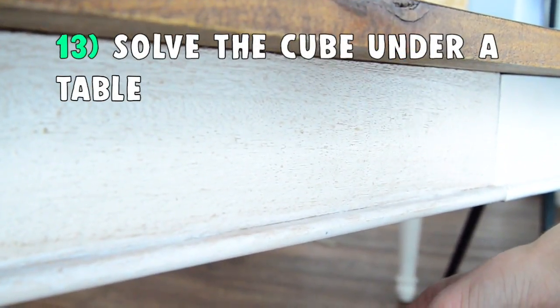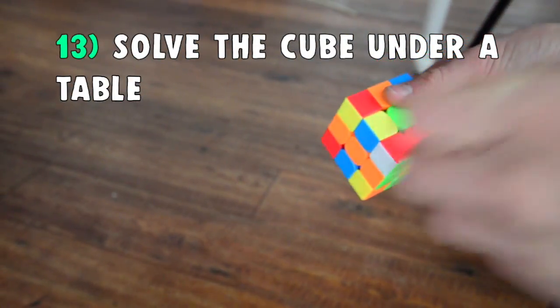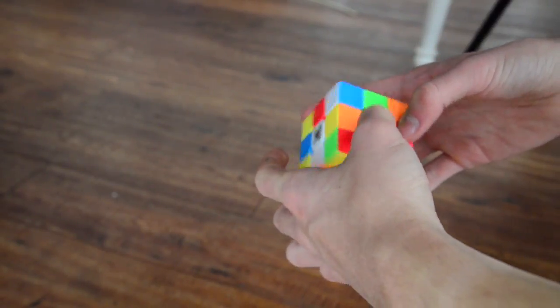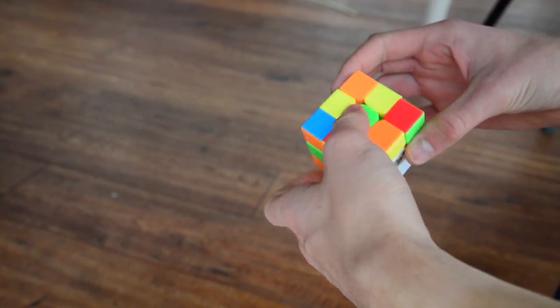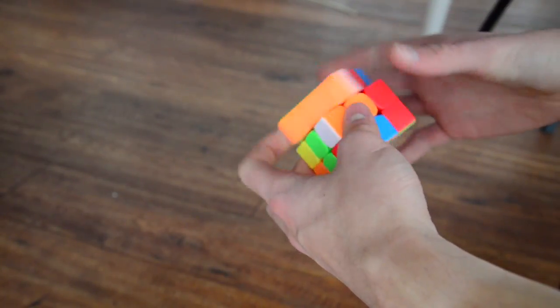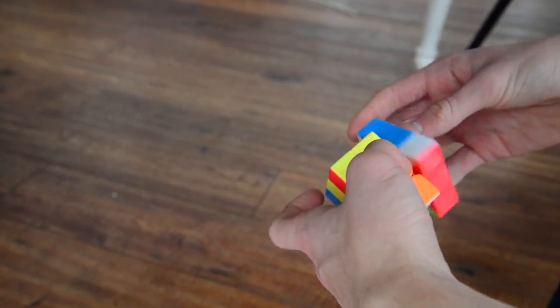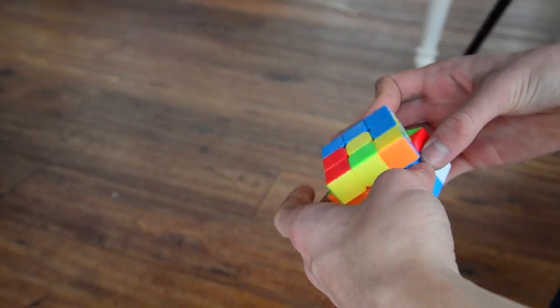So now you scramble the cube again, put it under the table and follow your solution. And imagine you're a judge and you can't see the cube. So follow everything that is in the solution.